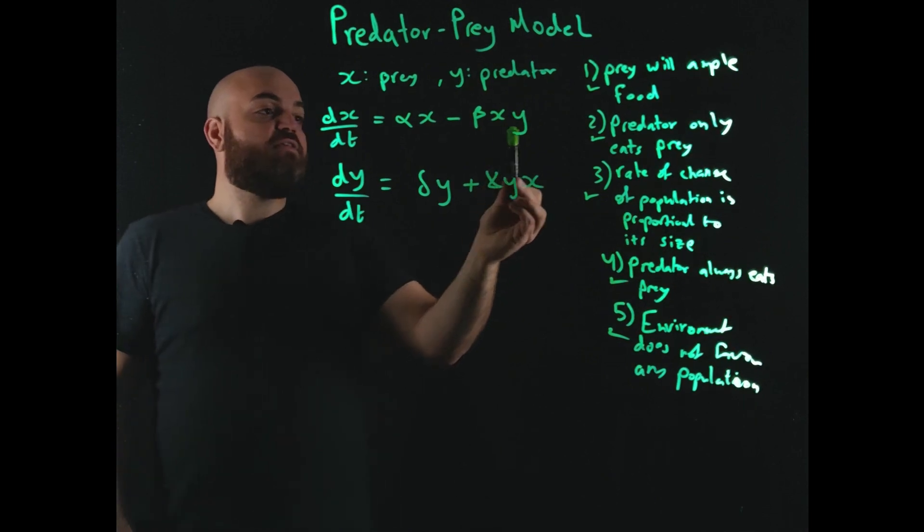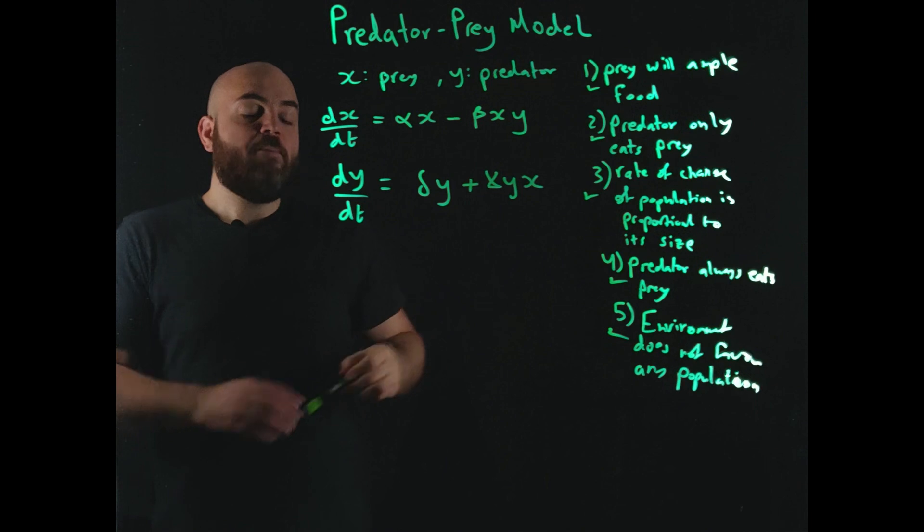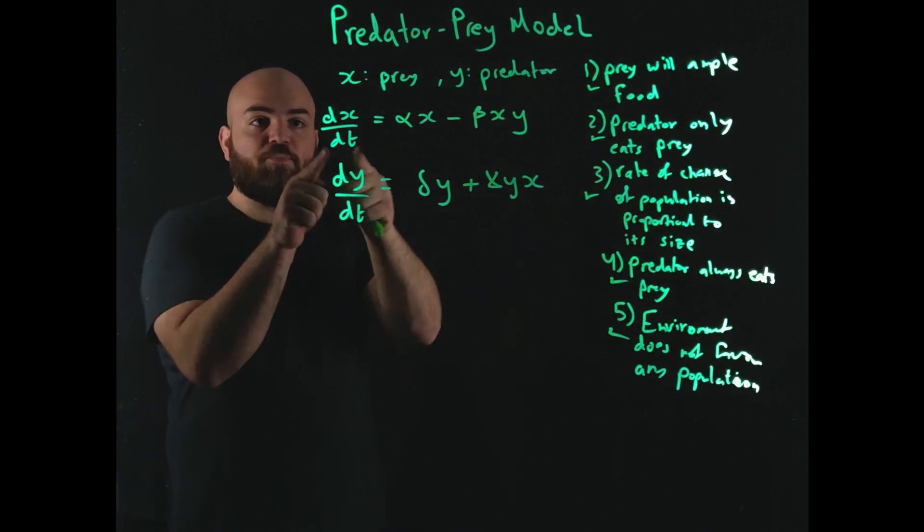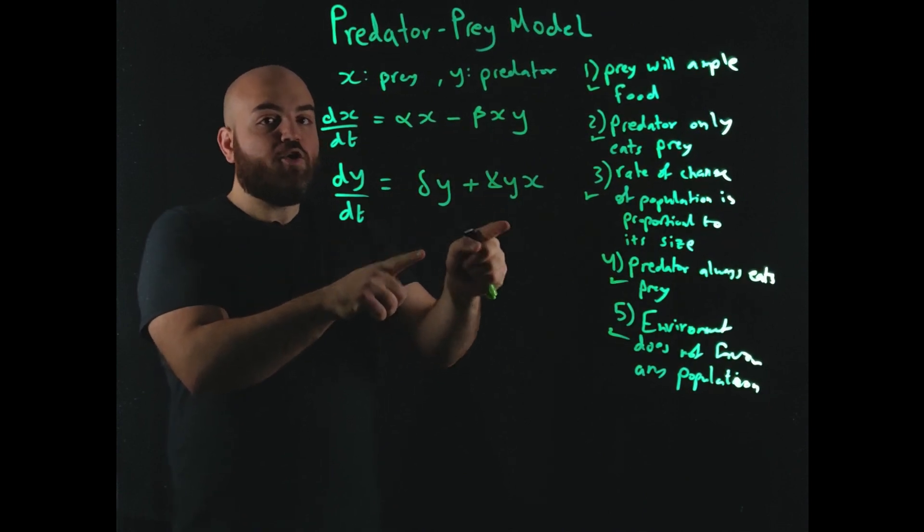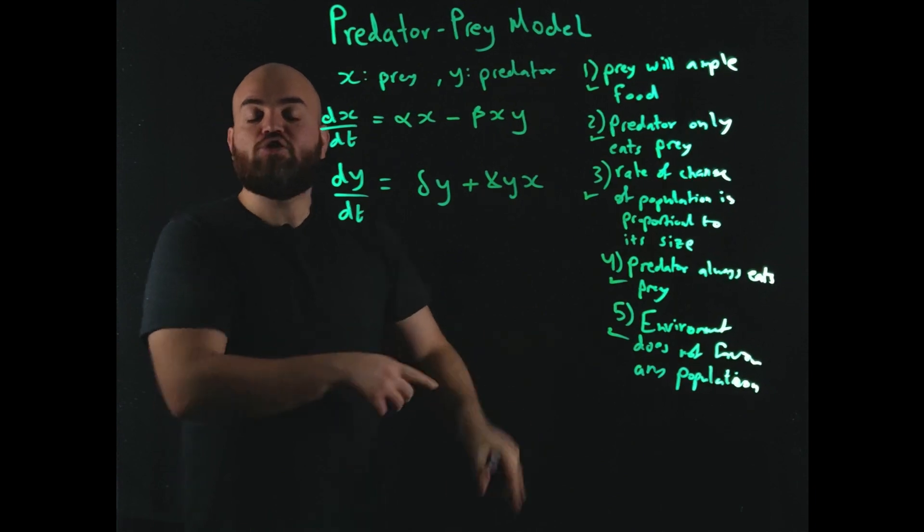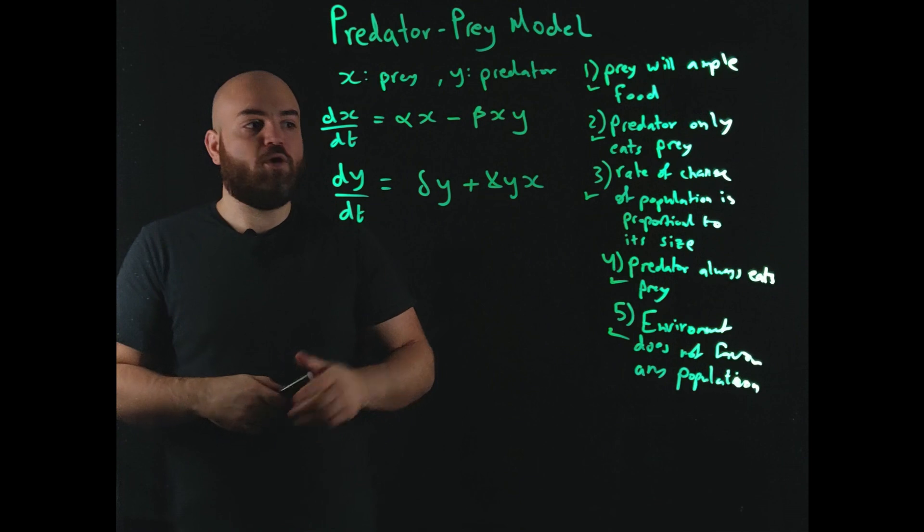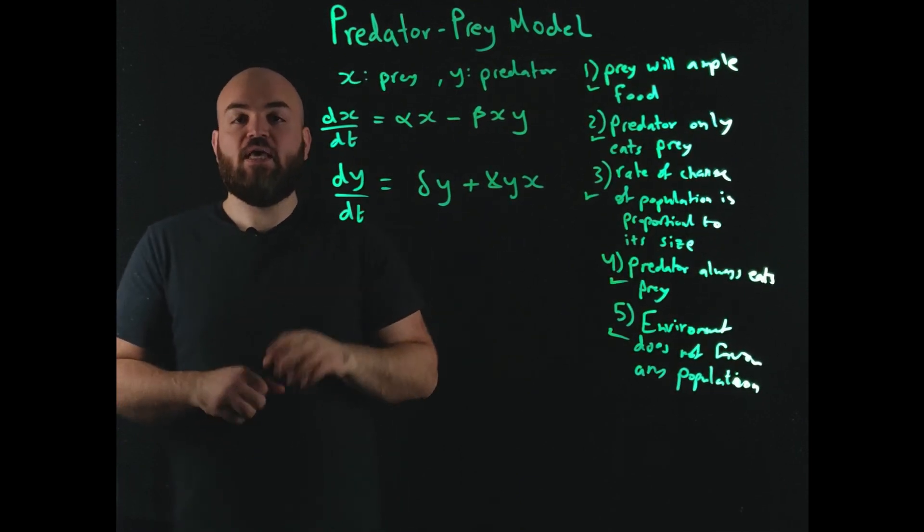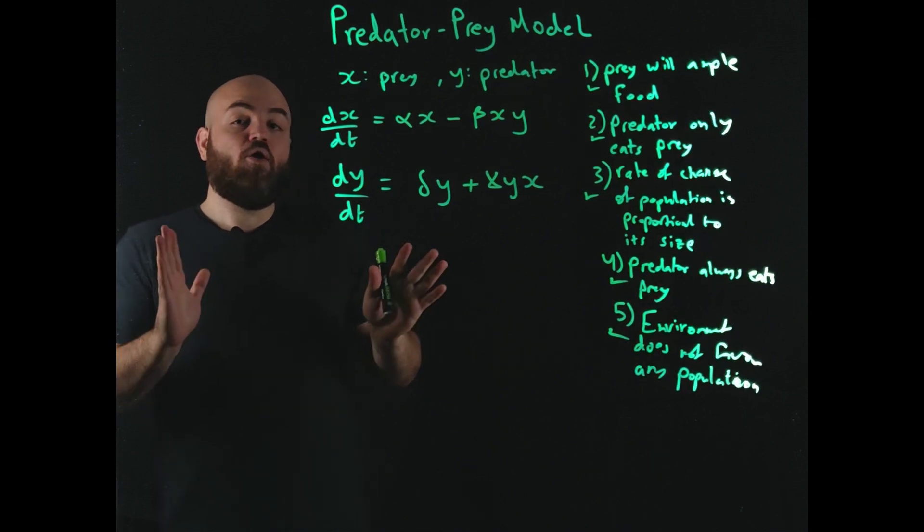Now we know that it will grow in size based on how much it meets the prey, the same way. So you can see that this term and this term are the same, but we're not using the same factor, because the predator will meet the prey and it will eat it. That's why the prey's size decreases, the negative sign. But the predator won't grow at the rate that it eats the prey. So it's not like the wolf eats one sheep and then it gets another wolf. That's not how it works. So the gamma here is different than beta, there are different coefficients, different constants that will dictate all this change. Okay, great.